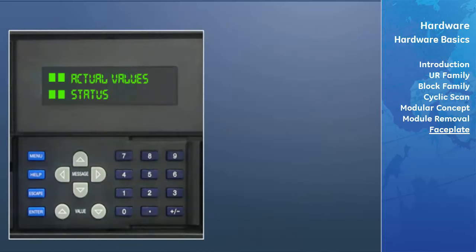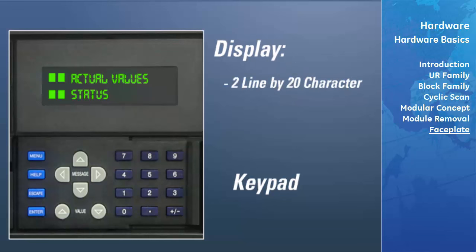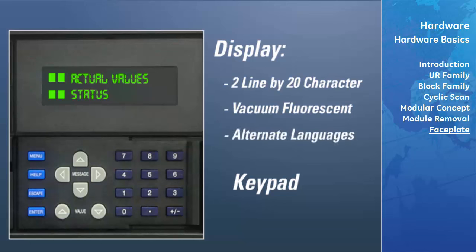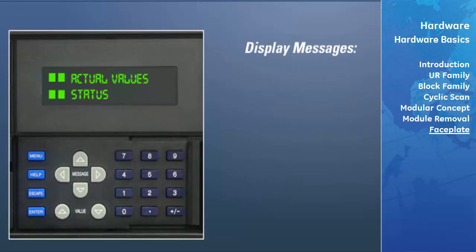The fourth panel contains a display and a keypad. The display is a 2-line by 20-character vacuum fluorescent display. While the keypad and display are not actively being used, the display will default to defined messages. High-priority, event-driven messages will automatically override the default messages and appear on the display. Messages can also be displayed in alternate languages. Display messages are organized into menus under the main headings: actual values, settings, commands, and targets.